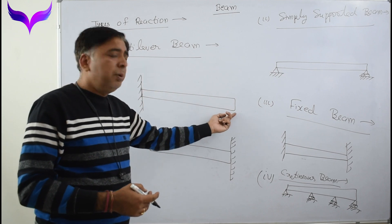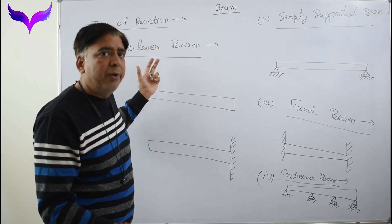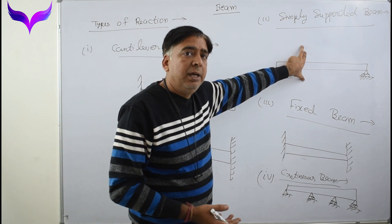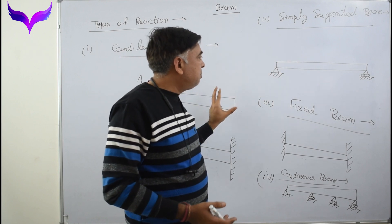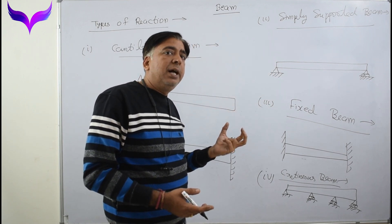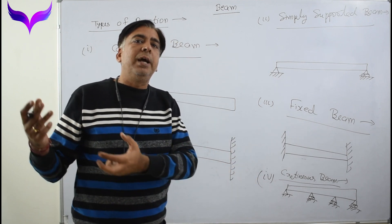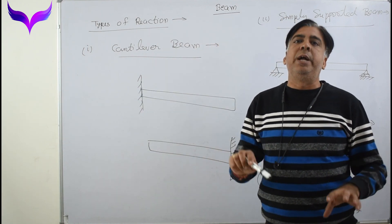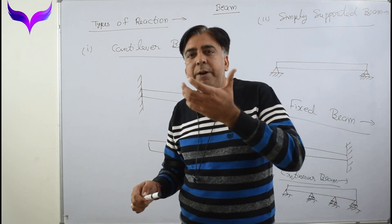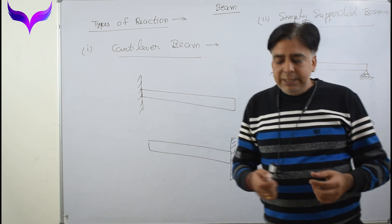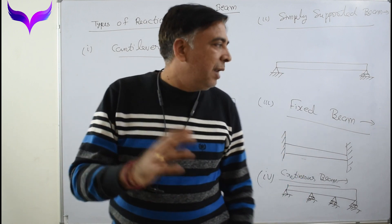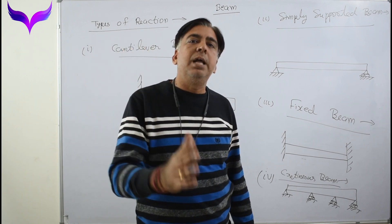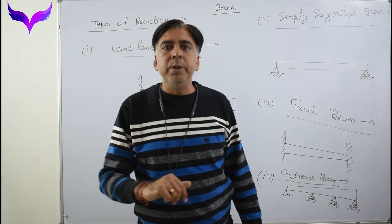If one end is fixed and the other end has a roller support, this is called a propped cantilever beam. Now an important concept: what is indeterminacy and what is an indeterminate or determinate beam? An indeterminate beam is one in which the number of reactions is more than the number of equilibrium equations, so we cannot calculate them using equilibrium conditions alone.